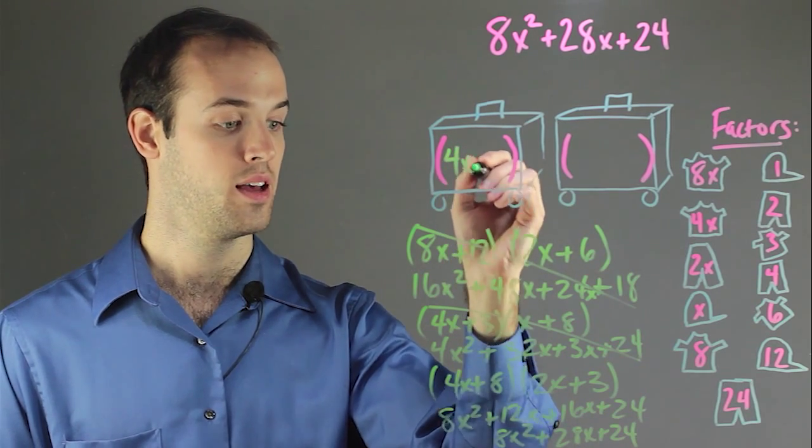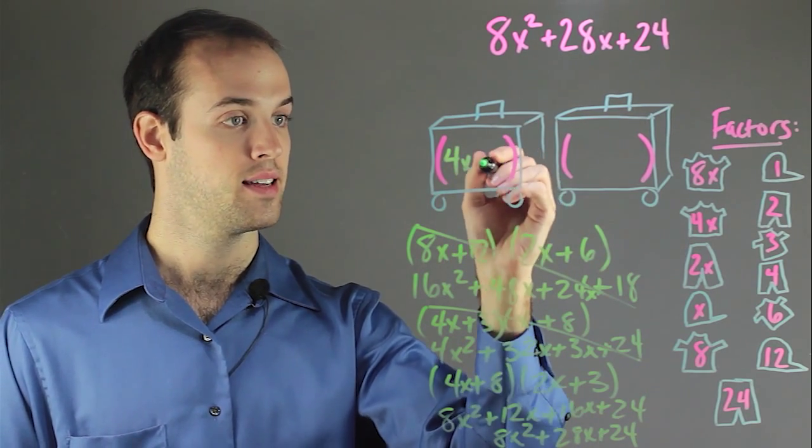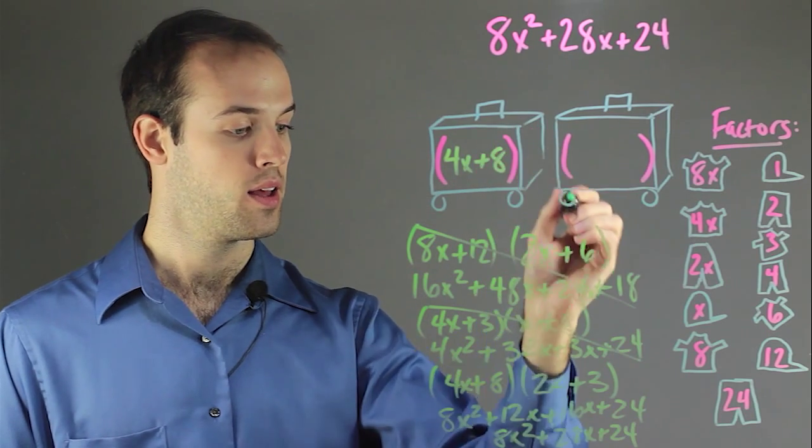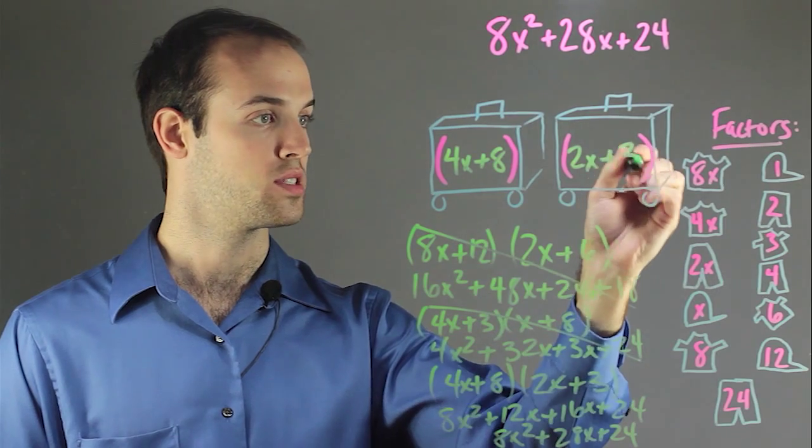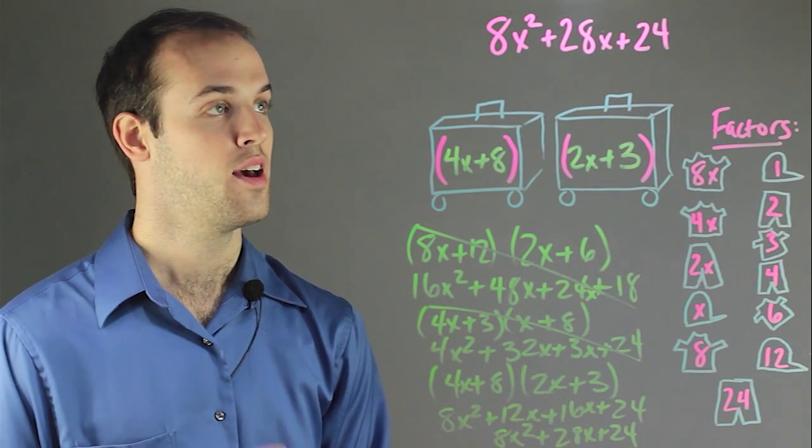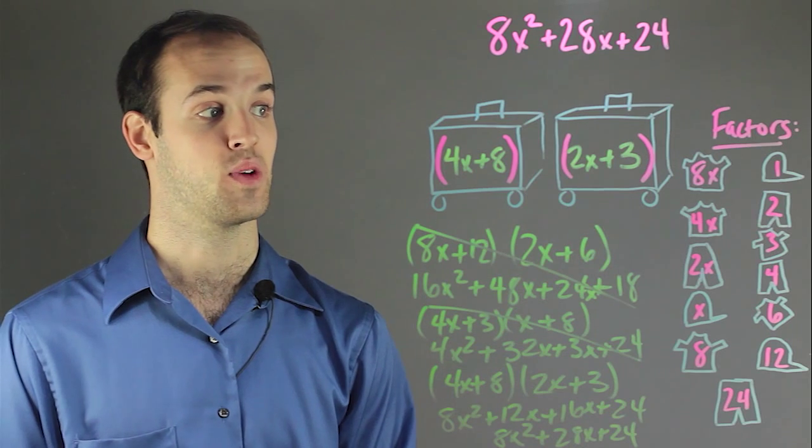We've got 4x plus 8, and over here we're going to have 2x plus 3. So as you can see, factoring a trinomial is exactly like packing a suitcase.